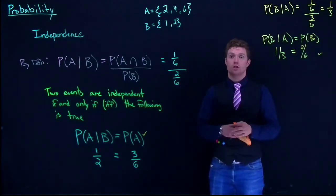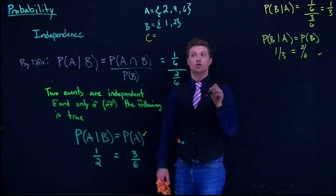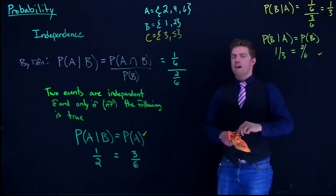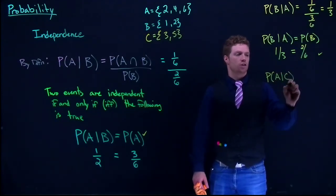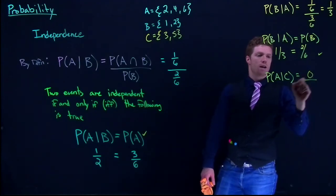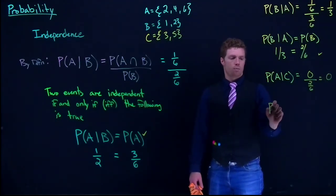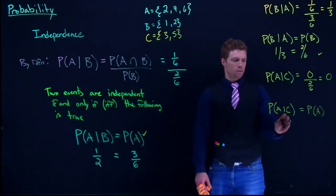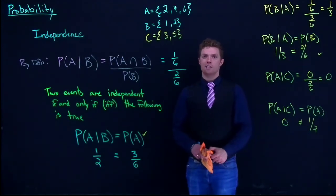Now let's check if A and C are independent, where C = {3, 5} — the mutually exclusive event. The probability of A given C: since rolling a 3 or 5 means none of {2, 4, 6} occurred, the intersection is 0, giving P(A|C) = 0. But the probability of A is 1/2. Since 0 ≠ 1/2, A and C are dependent events.